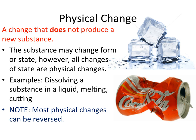A physical change is a little bit different than a physical characteristic. Physical change describes a change that does not produce a new substance — you're actually changing the state or form of the matter. For example, ice is just H2O in its solid form, and when it melts, you get H2O in its liquid form. Both are H2O; there's no difference in the chemical composition, only a difference in state. This is a physical change.